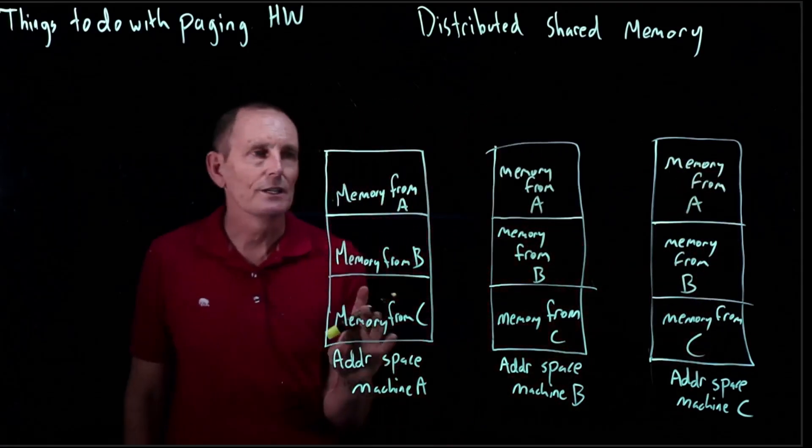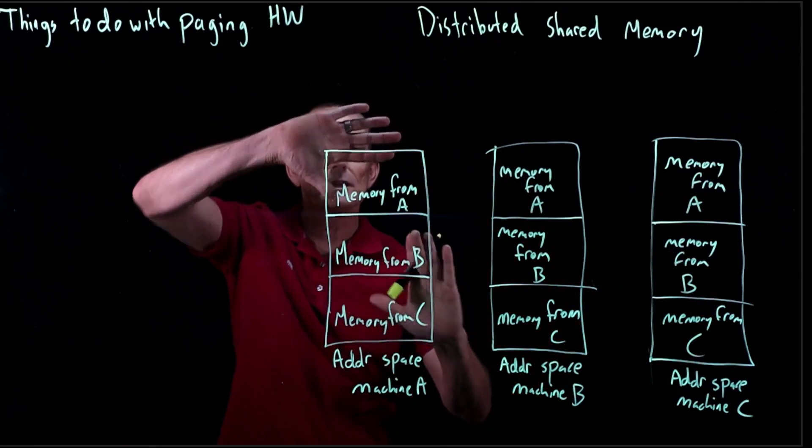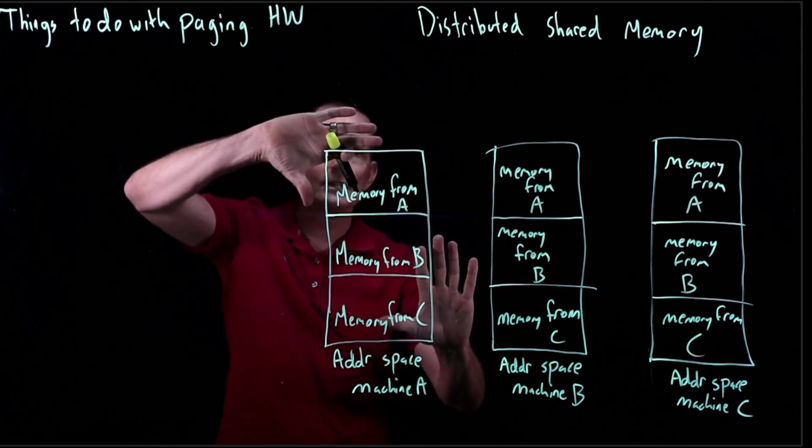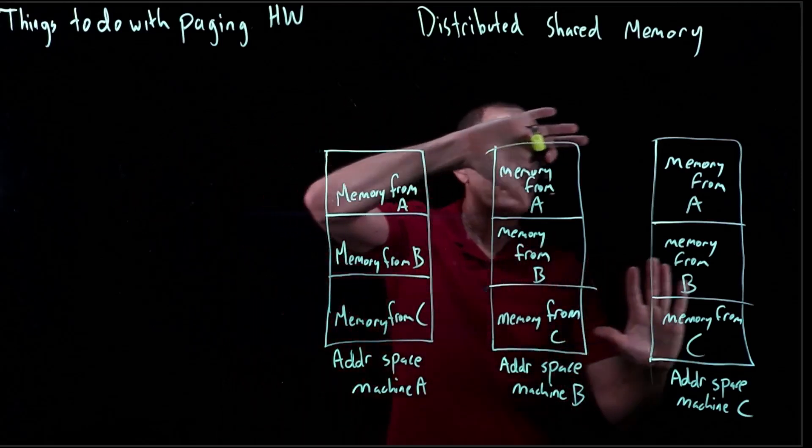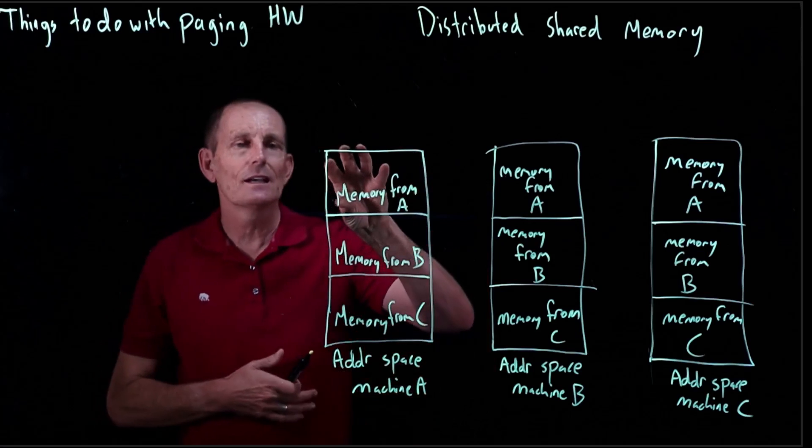So we've got these three different machines and they have this unified view of this portion of their address space. So they see this portion the same here and on this machine here and this machine here. Now the actual memory is a smaller subset.